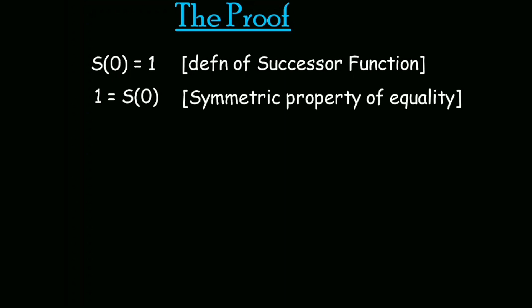Now, we know that based on the definition of the successor function, successor of 0 is equal to 1. The symmetric property of equality implies that 1 is also equal to successor of 0. So we have 1 plus 1, which is equal to 1 plus successor of 0, as we have already established that 1 is equal to successor of 0.